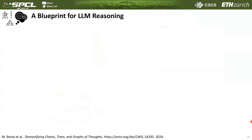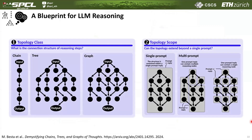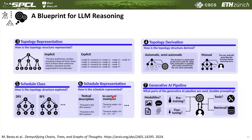We follow up with a blueprint for LLM reasoning — a general blueprint for devising a new LLM reasoning scheme. Important aspects of this blueprint are, on one hand, the topology class: is it a chain, a tree, or a graph? What is the topology scope? It can be contained within a single prompt, or maybe it can be contained across different prompts in different ways. Other important aspects are the representation of the topology — do we represent it implicitly or explicitly? And how do we derive this topology — is it manual, automated, or maybe semi-automated?